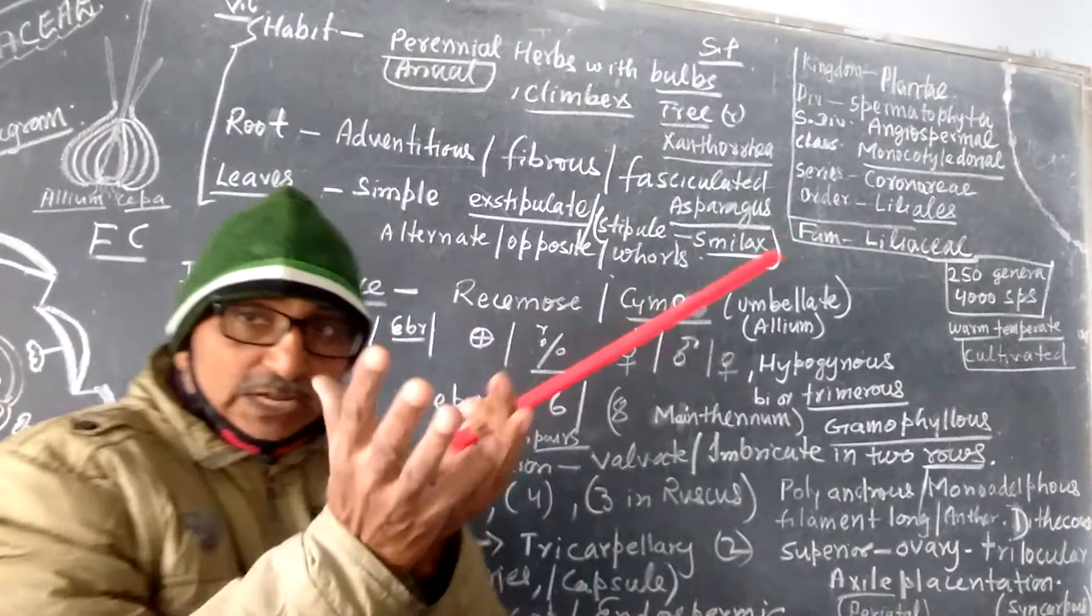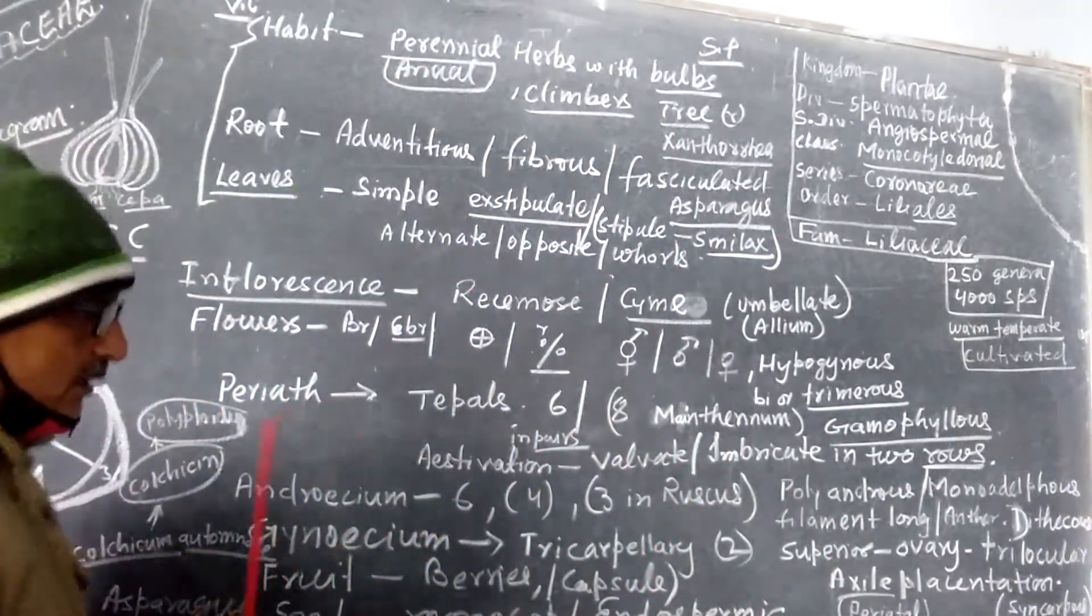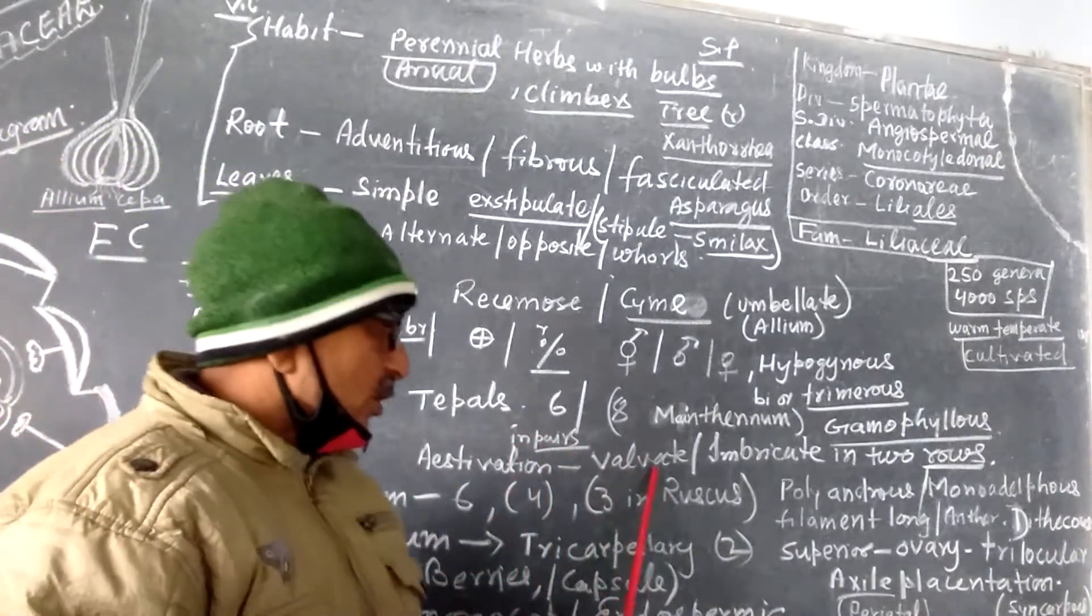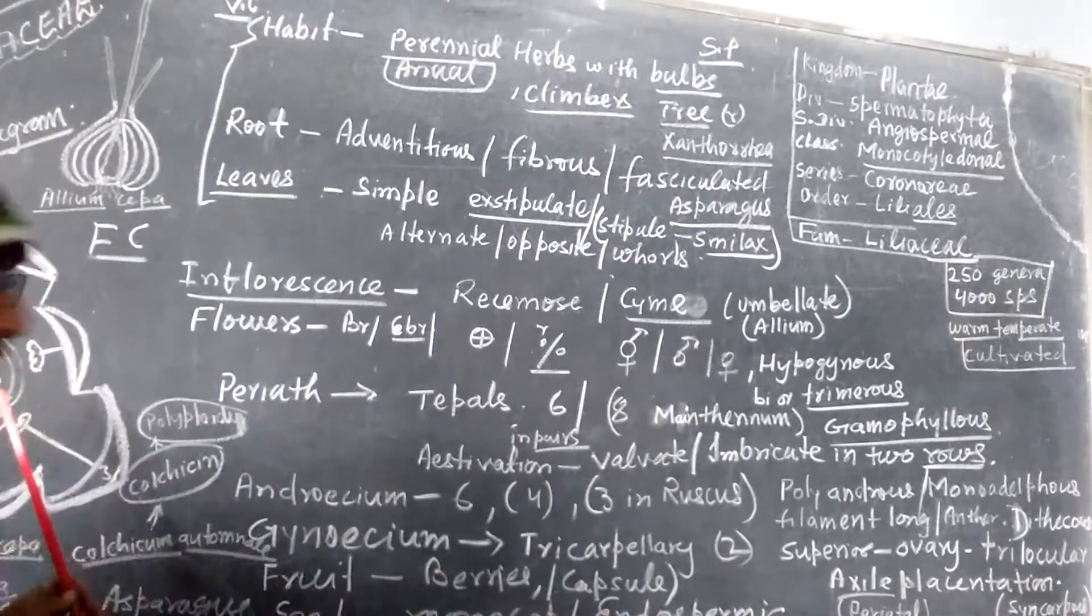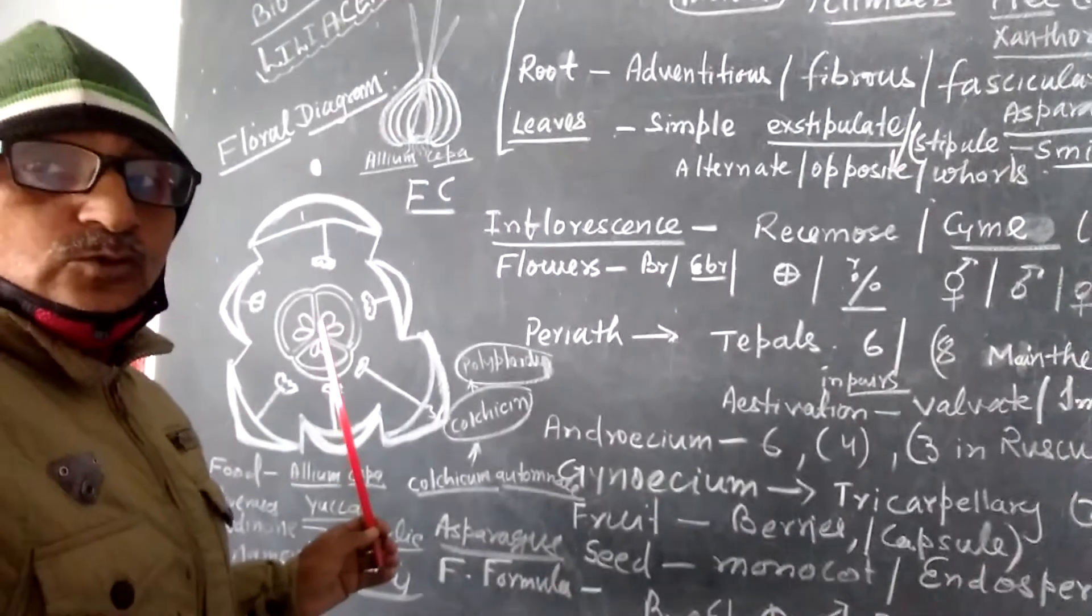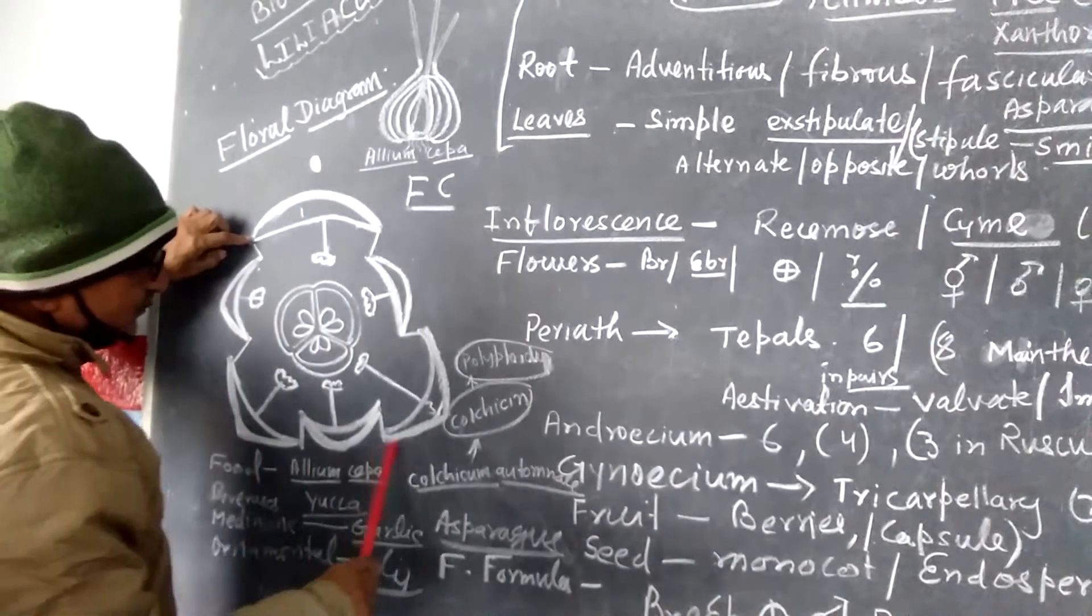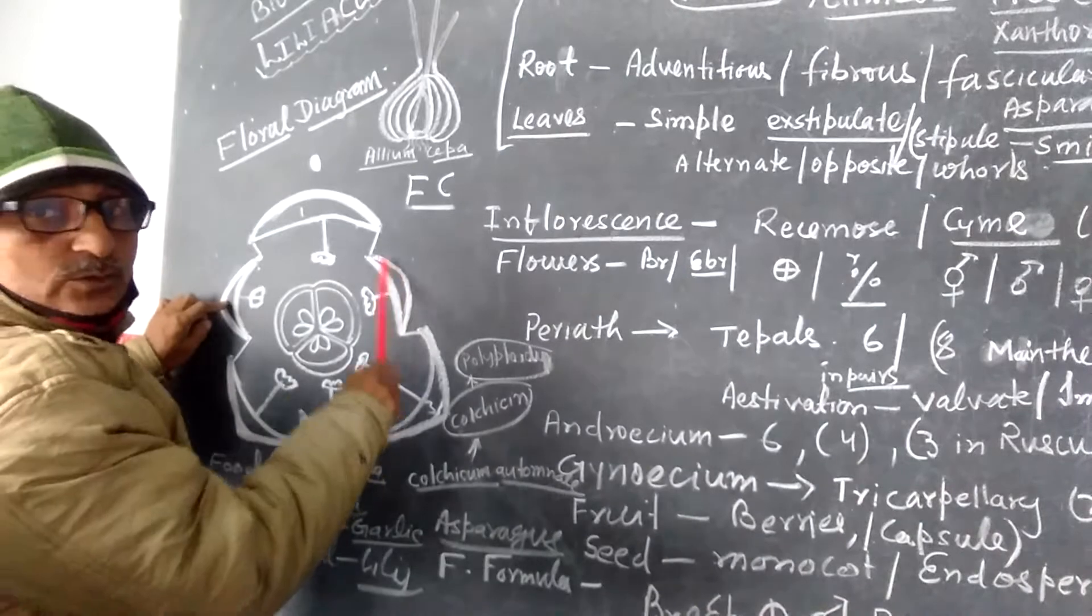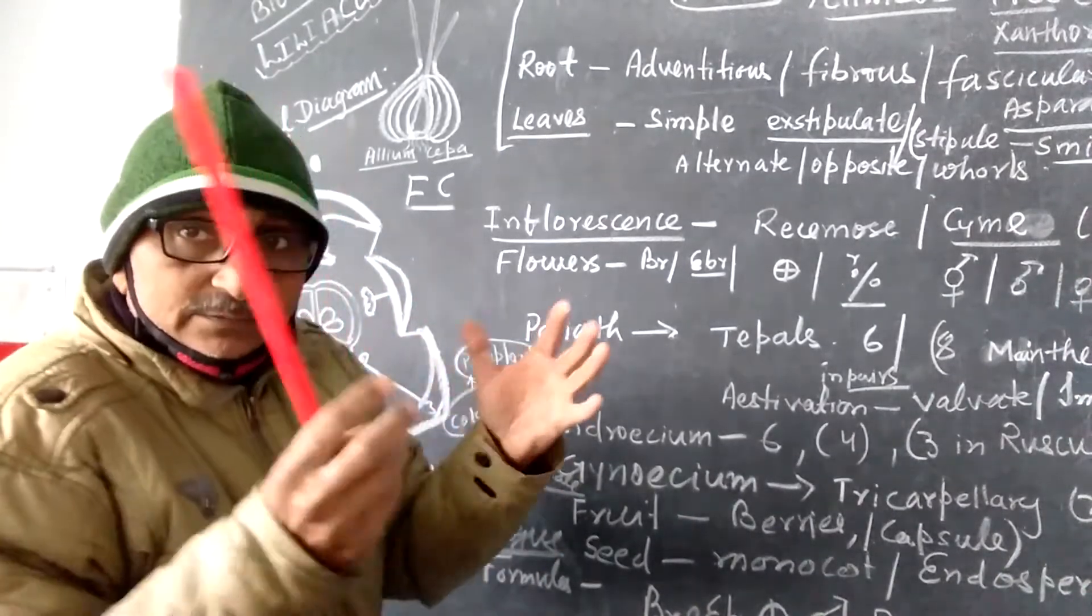Gamophyllous, they unite together to make a tube-like structure. Aestivation valvate or sometimes imbricate in two rows. You will clearly see in the diagram here that they are in two rows. One row, the outer row, these three, and another row of these three. So in two rows, the tepals are attached, fused together.